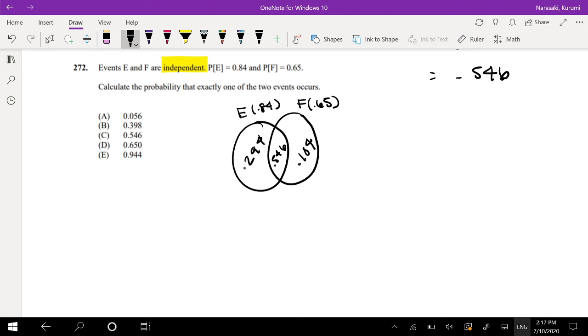So we're looking for the probability that exactly one of the two events occurs. So exactly just the E or exactly just the F. That's just equal to 0.294 plus 0.104, which is equal to 0.398.